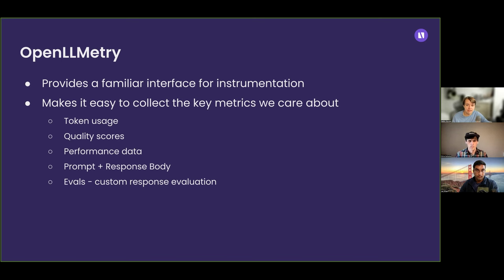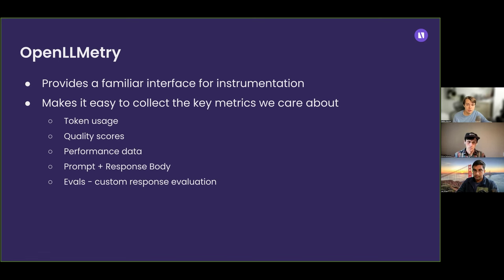We'll walk through a couple of examples of what that data looks like and how to set it up. What OpenLLMetry makes much more convenient is capturing structured data out of your AI calls — you can record how many tokens are being passed into your model, the response body itself, quality scores, and latency of different invocations to different models. You can even report custom attributes like evals, where you use an evaluation score on the response to record that data over time and understand, for instance, when you change a model or tweak a prompt, how did your score change in production or in a staging environment?